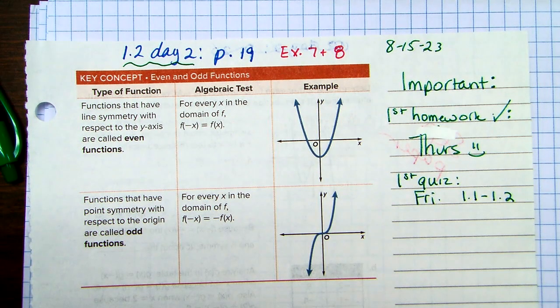So we have pretty short notes. We're just doing two examples today, all right? And then I'll tell you what the homework is. We're going to be talking about something called symmetry.